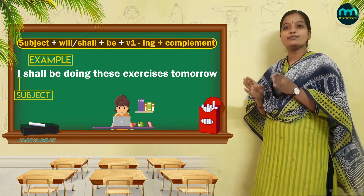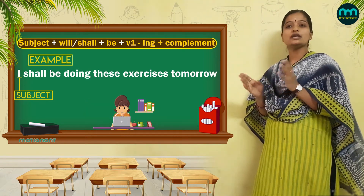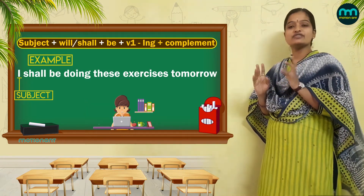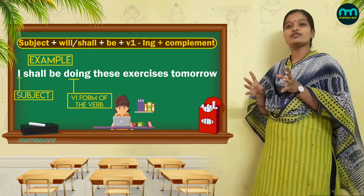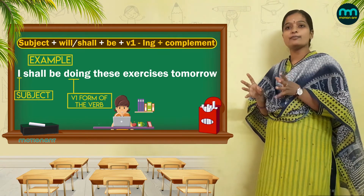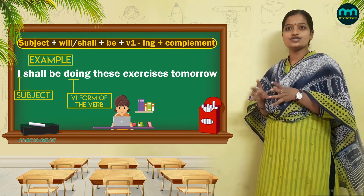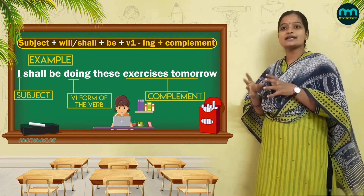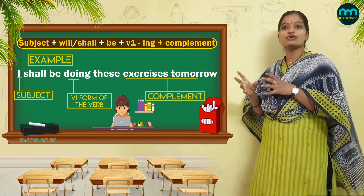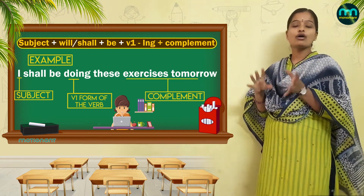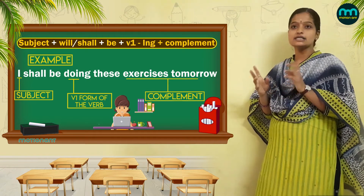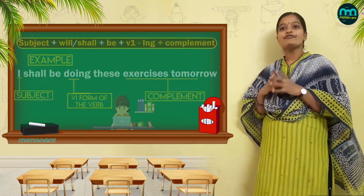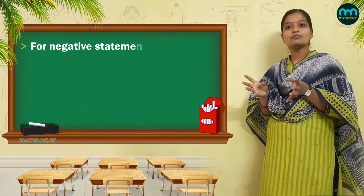And with 'be', we are using 'do' which is the V1 form of the verb by adding -ing. The exercises tomorrow is the complement of the sentence.